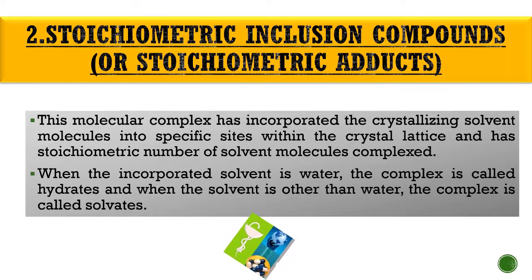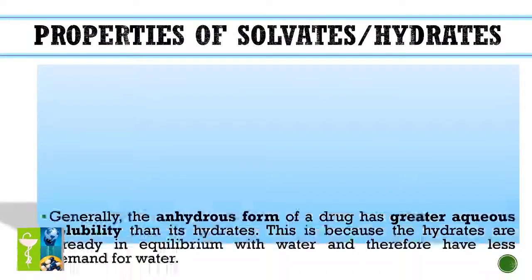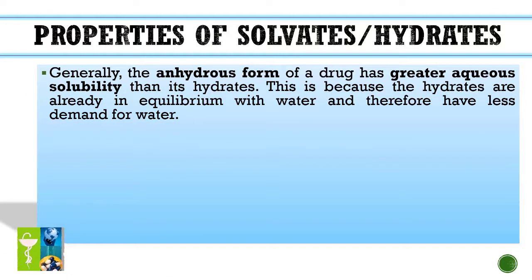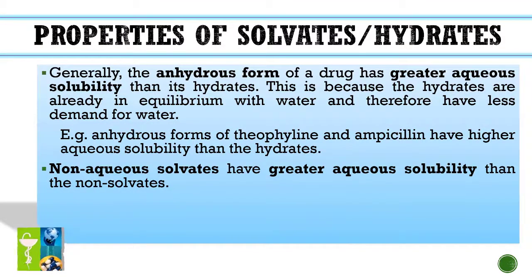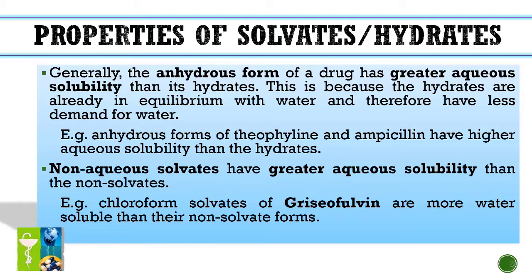What do you mean by solvates? When the solvent is other than water, the complex is called solvates. Regarding properties of solvates or hydrates: generally, the anhydrous form of a drug has greater aqueous solubility than its hydrates. This is because the hydrates are already in equilibrium with water and therefore have less demand for water. For example, anhydrous forms of theophylline and ampicillin have higher aqueous solubility than the hydrates. Non-aqueous solvates have greater aqueous solubility than the non-solvates. For example, chloroform solvates of griseofulvin are more water soluble than their non-solvate forms.